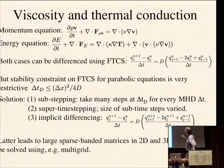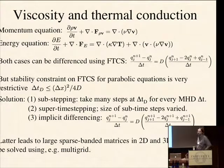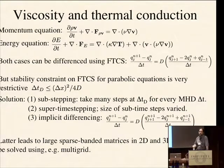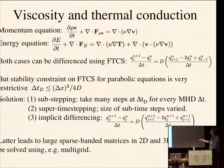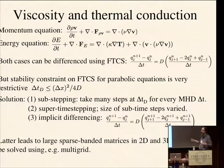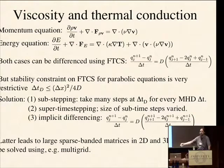The FTCS difference formula is straightforward to implement, but the time step constraint is quite restrictive — it goes like ΔX². Double the resolution and the time step goes down by a factor of four. This quickly makes the diffusive time step much smaller than the CFL time step from wave propagation speeds and the overall limiting time step for the whole calculation. One approach is sub-stepping: take many small steps at the stability limit for the parabolic terms for every MHD time step, cycling small diffusion steps until one full ΔT of MHD is completed.